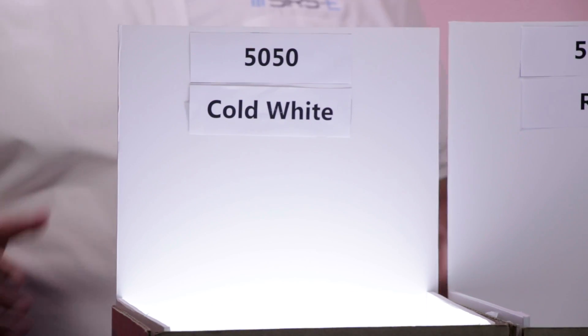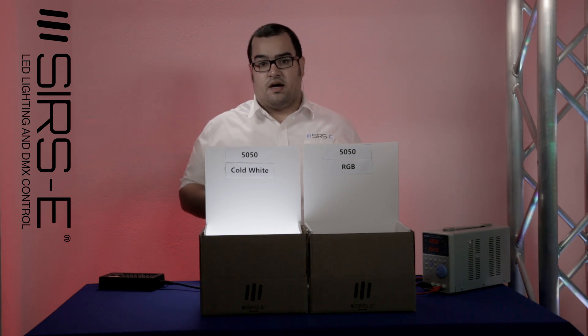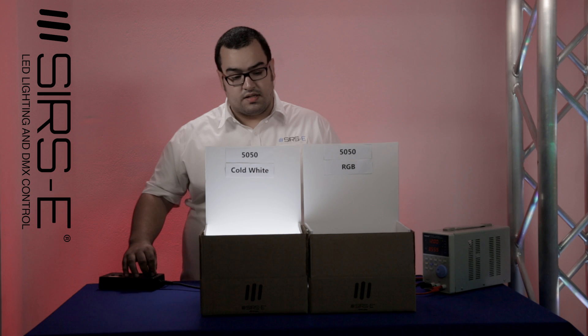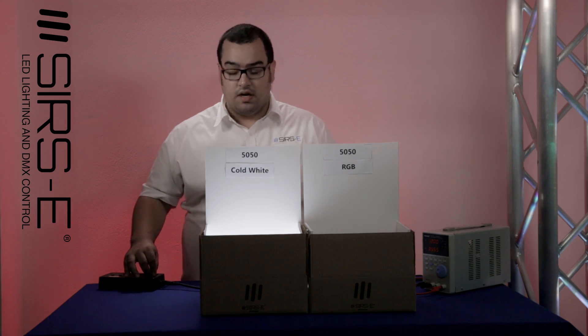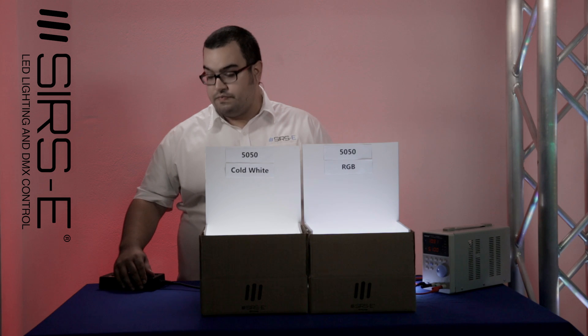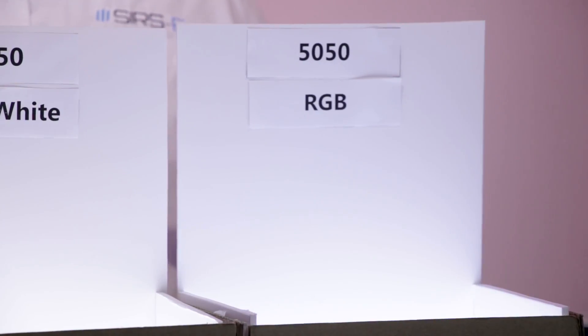That one is going to have about 12,000 to 14,000 Kelvins. And as you can see compared to an RGB strip — when you add the red, the green, and the blue — the white made by mixing the colors is different, because the intensity on the cold white LED strip is going to be higher than the RGB strip.